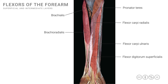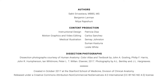Note that the flexor digitorum superficialis appears to be somewhat in the same layer or plane as the FCR and FCU. As a result, some authors describe it as being part of the superficial group. However, it is a little deeper, and when the palmaris longus is present, this muscle is deep to it and partly covered by it. So strictly speaking, classifying the flexor digitorum superficialis as an intermediate group muscle is the most accurate approach.